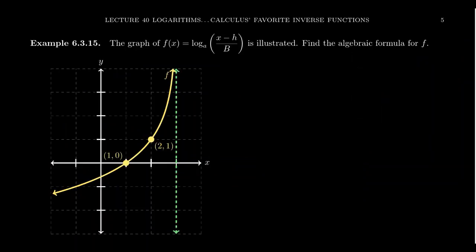Things can get a little bit more complicated. Look at this picture: we see a logarithm which goes through the point (1, 0) — the standard x-intercept — and also through the point (2, 1). But the vertical asymptote is at x equals 3. In order to understand what's going on here, the most general form of a logarithm is f of x equals log base a of (x minus h) over b.